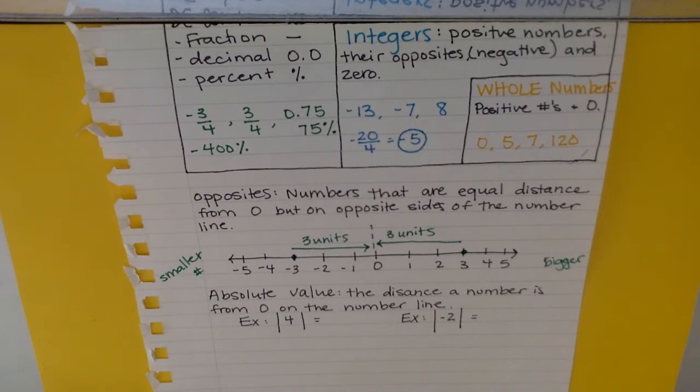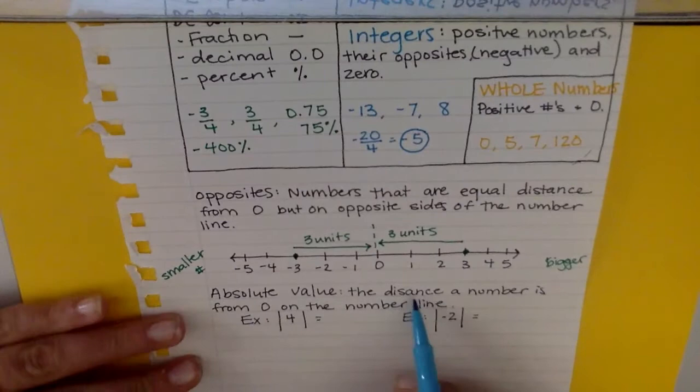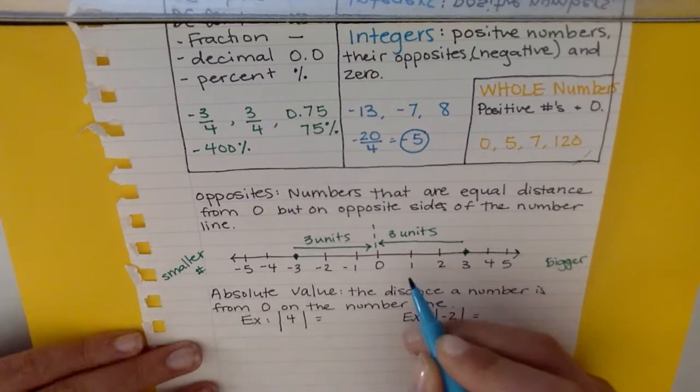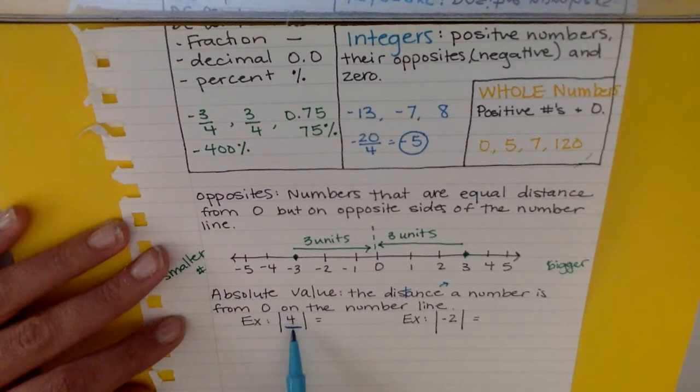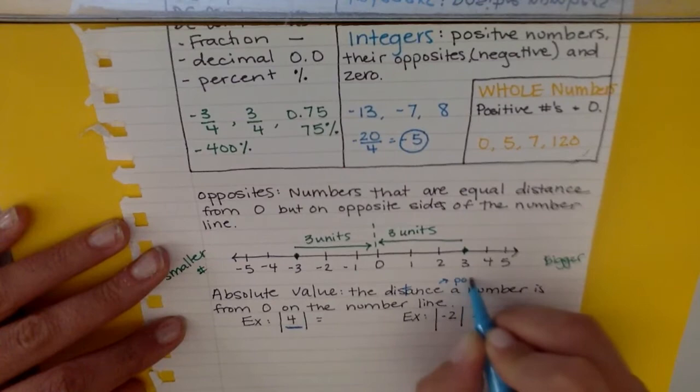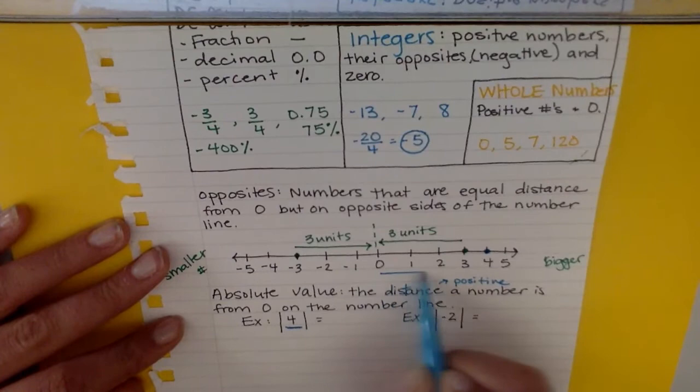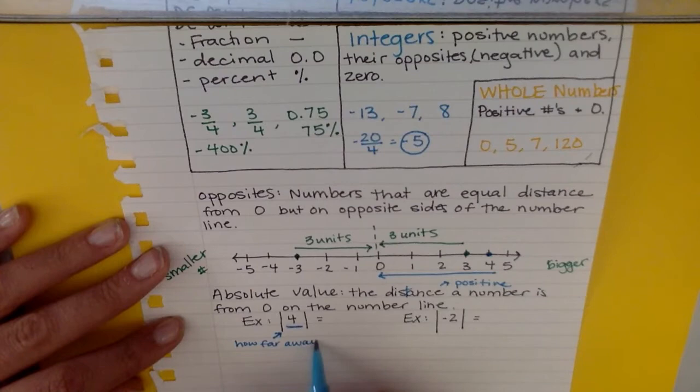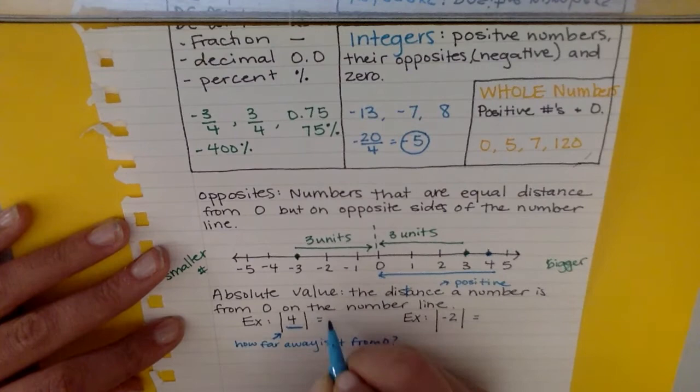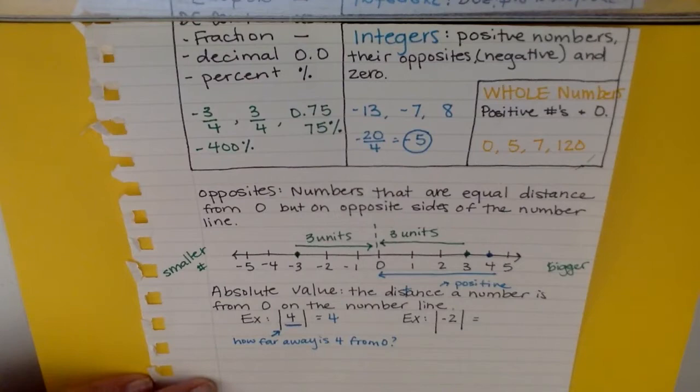The other thing we talked about in class today was absolute value, and this was the distance a number is from zero on the number line. Distances are always positive, so if there's something inside these fraction bars, it's asking how far away is four from zero on the number line. These are positive. I can look at four right here and I can see that four is four units away. That's what it's asking: how far away is four from zero? And it is four units, so the absolute value of four is four.